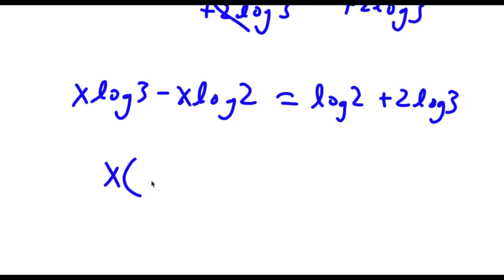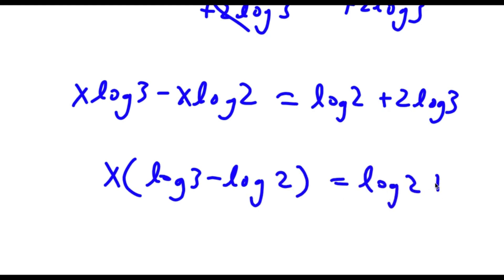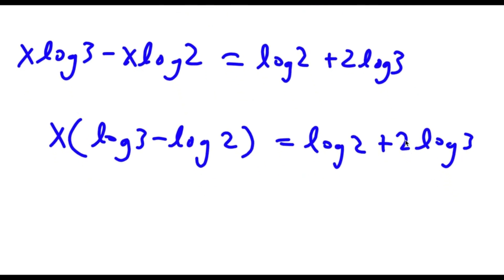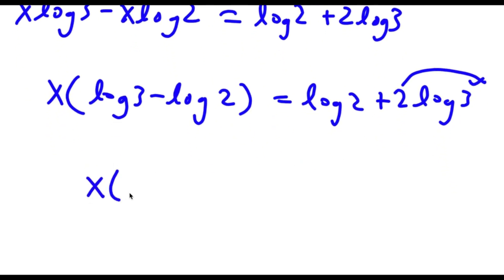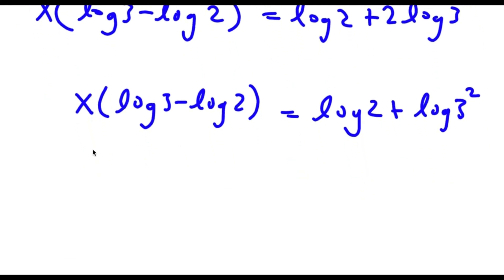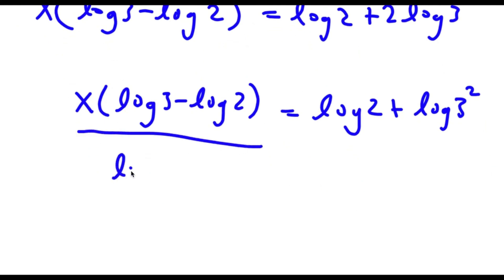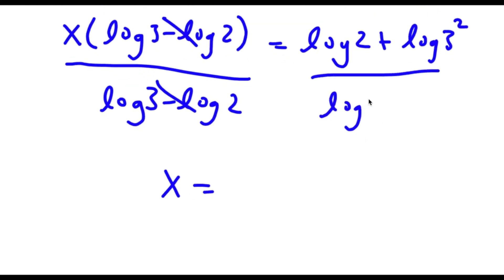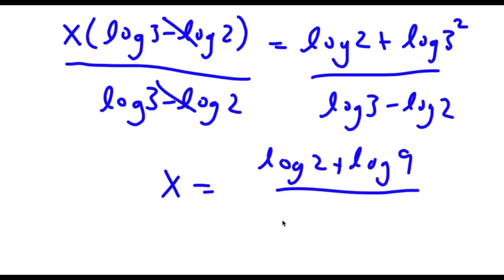Now if I factor out x from here, I have x times log 3 minus log 2 is equal to log 2 plus 2 log 3. And 2 log 3 — remember I can bring the 2 to the front as an exponent — so now I have x times log 3 minus log 2 is equal to log 2 plus log 3 squared. Now if I divide both sides by log 3 minus log 2, these two cancel out and I'm left with x equals log 2 plus log 9 over log 3 minus log 2.